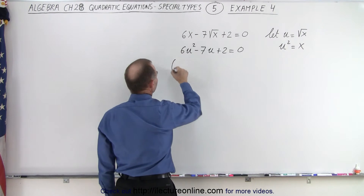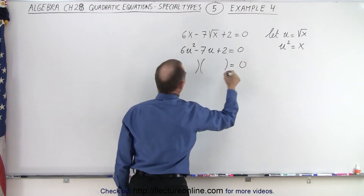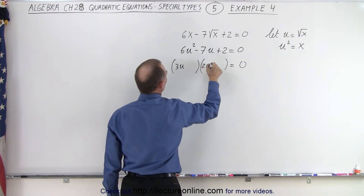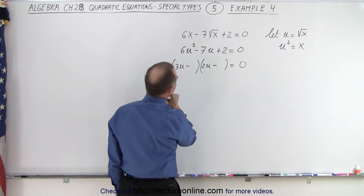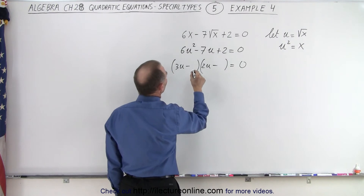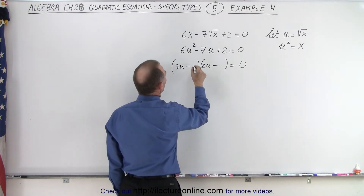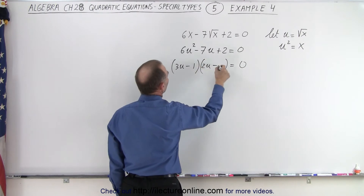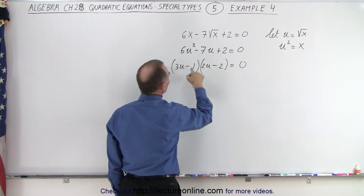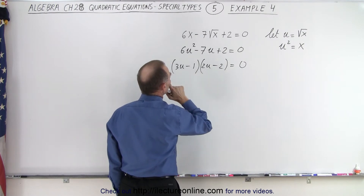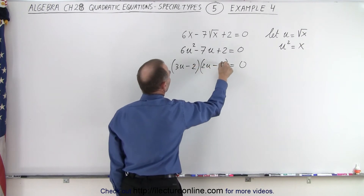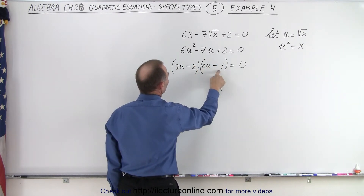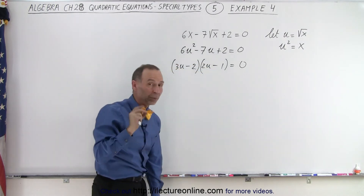I think we can factor this one, so let's try to find the two binomials. We need a 3u and a 2u. Signs are both negative because negative times negative gives us positive. How about 2 and 1? That gives minus 2 and minus 6 — no, that won't work. How about 2 and 1 in the other arrangement? That gives minus 4 and minus 3, and minus 4 plus minus 3 is minus 7. That will indeed work.